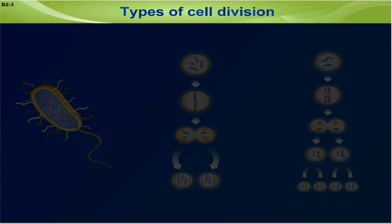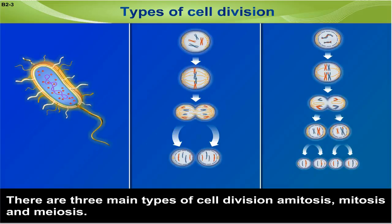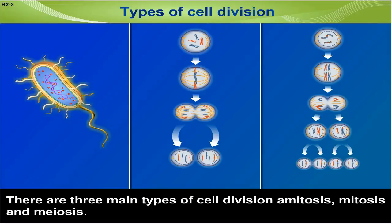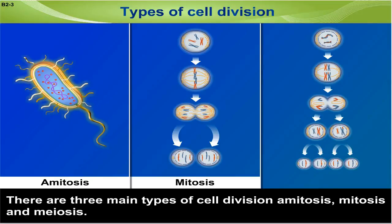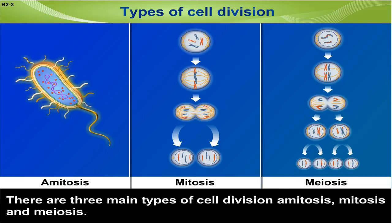There are three main types of cell division: amitosis, mitosis, and meiosis.